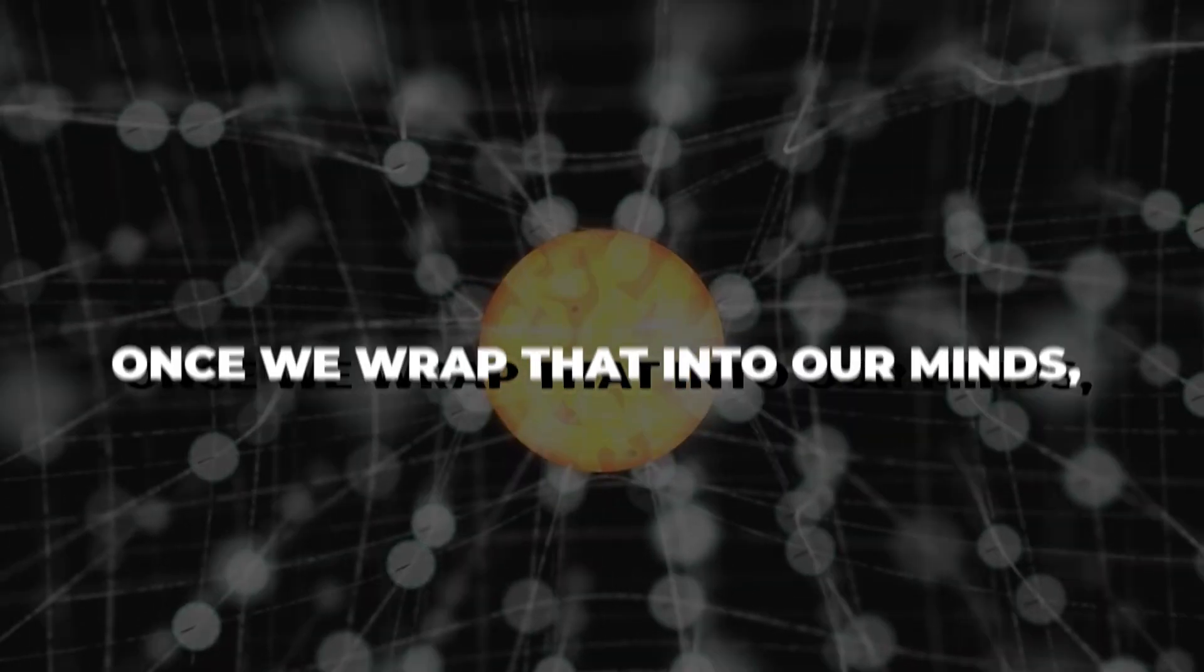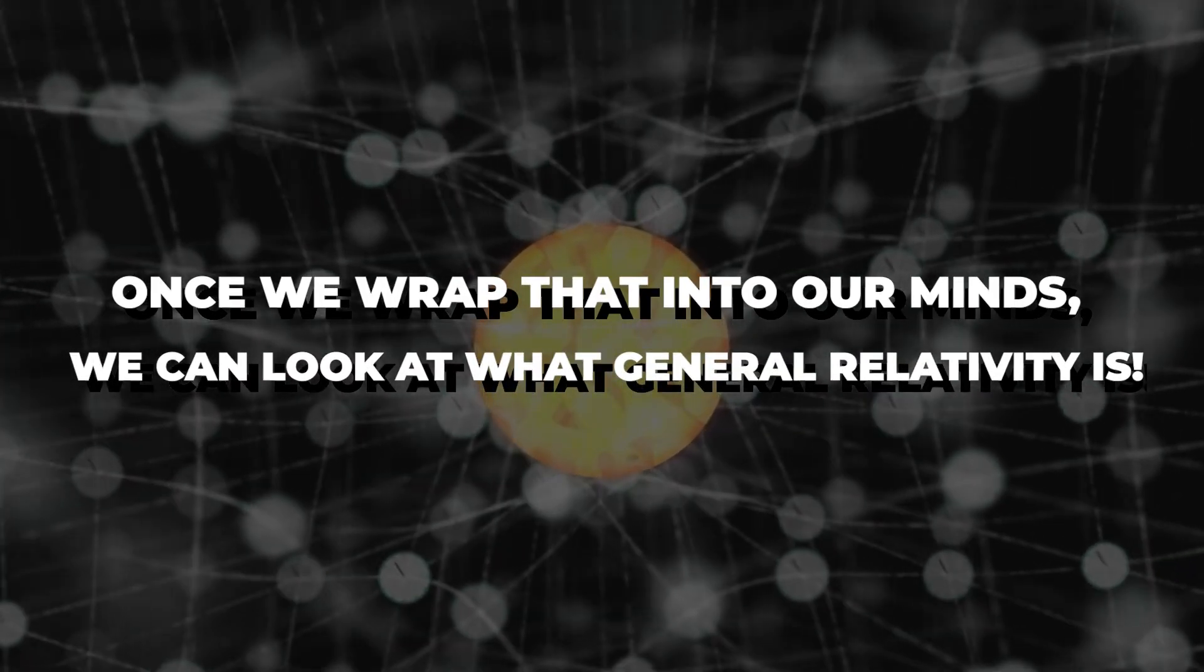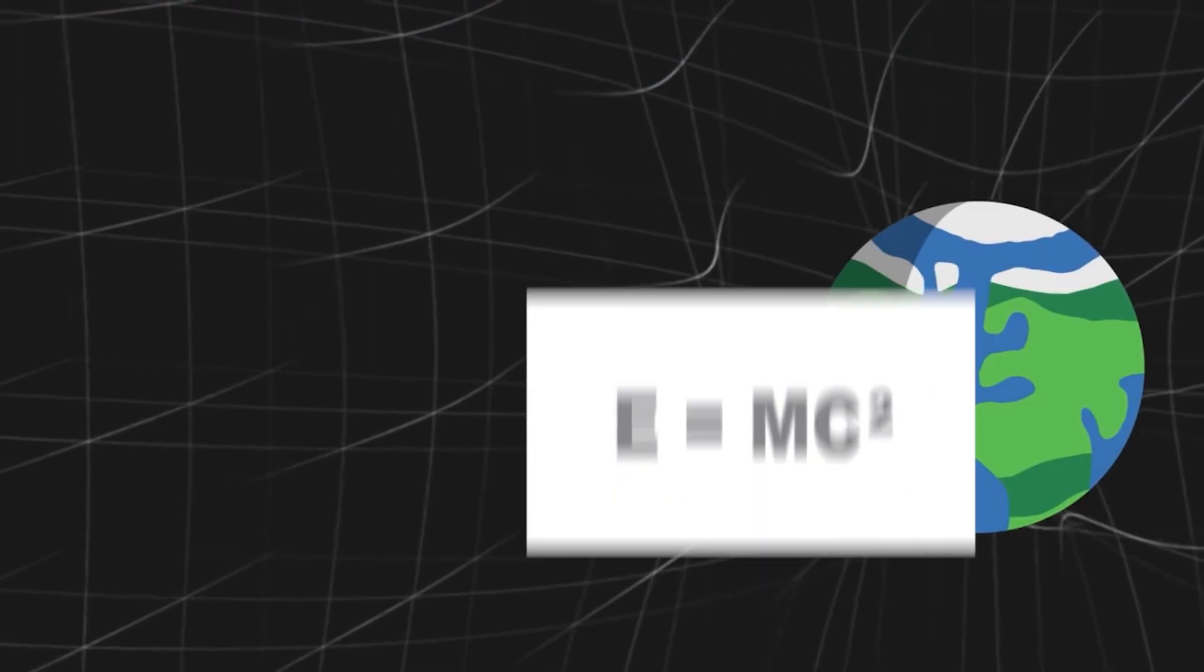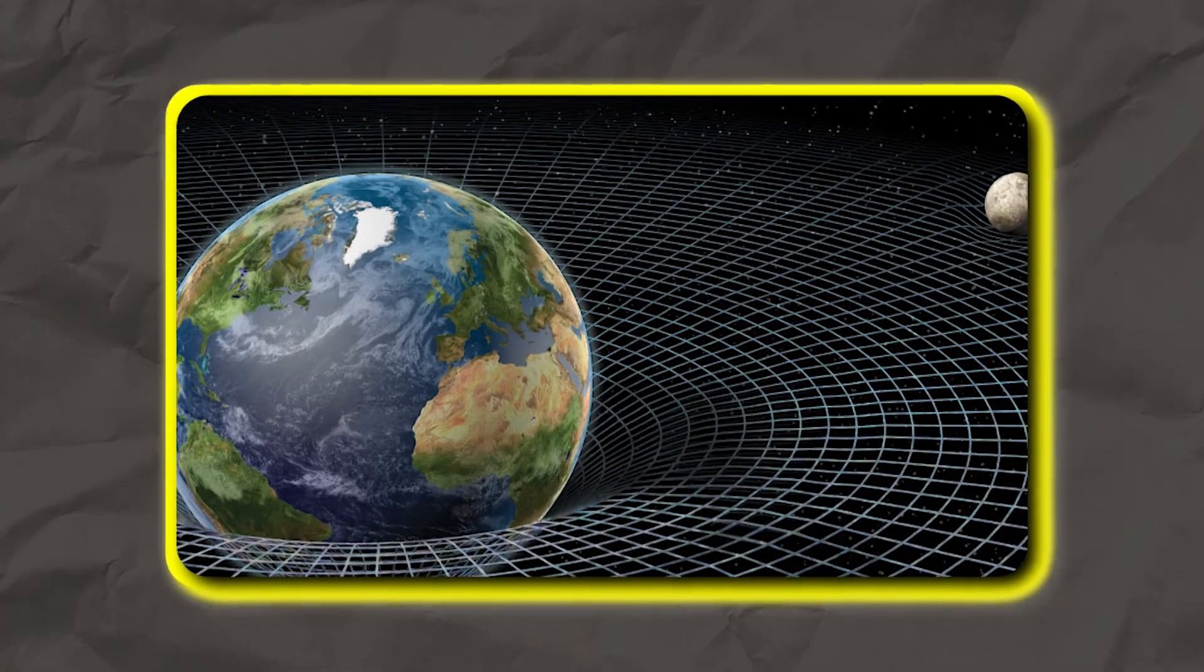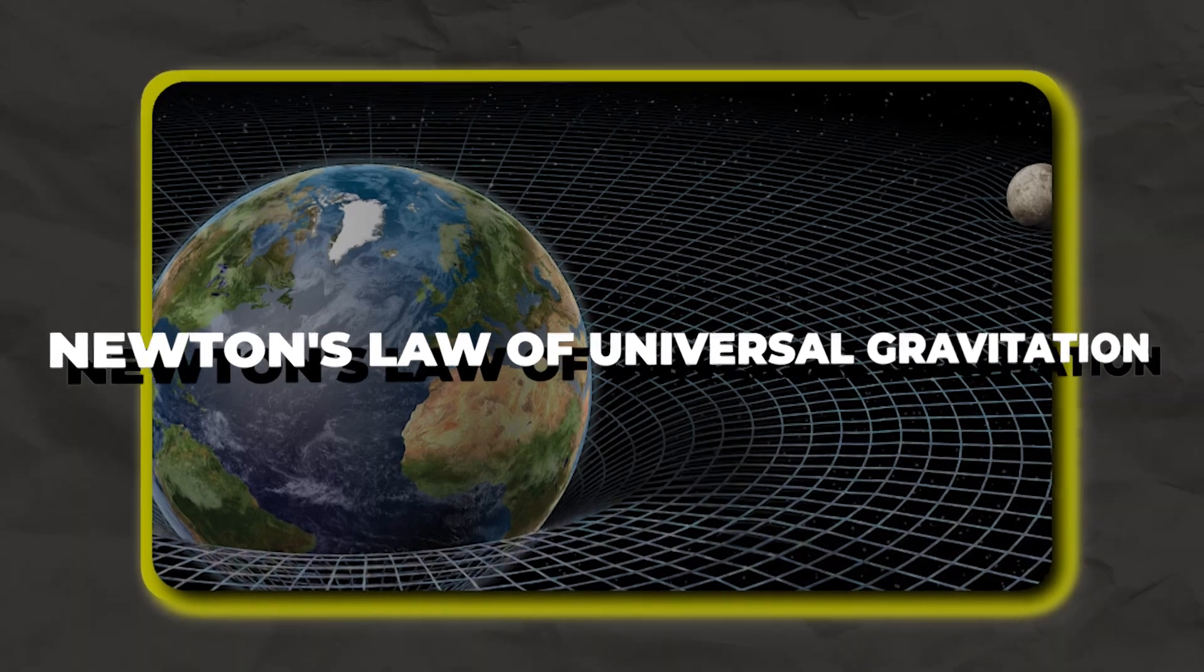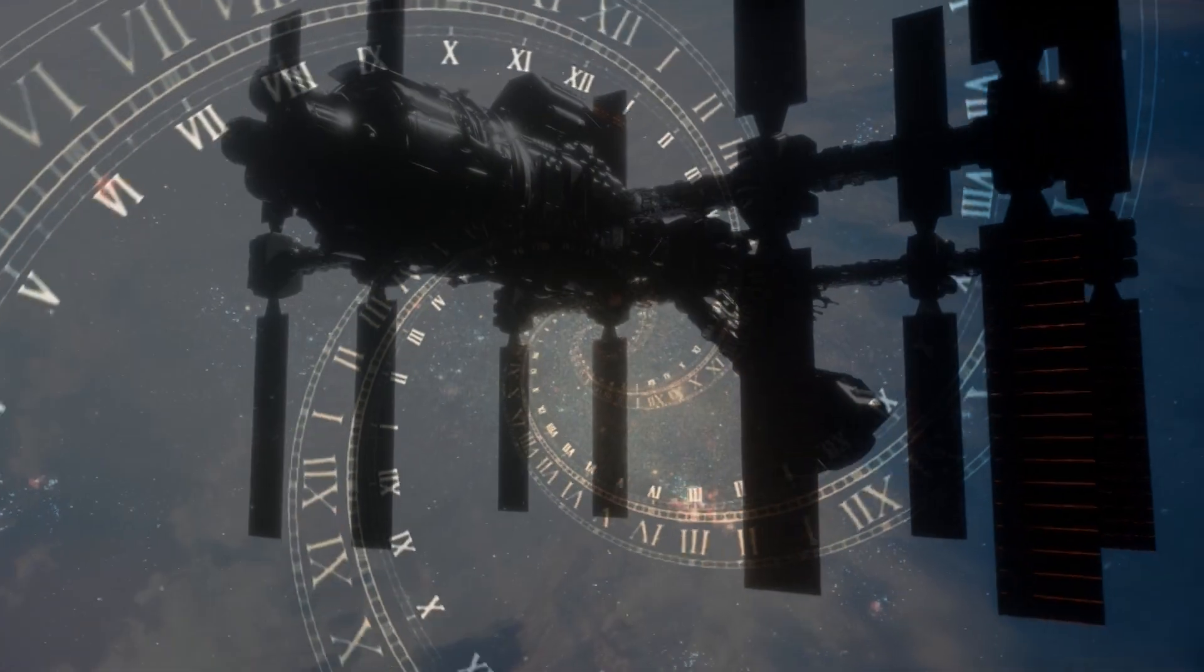Once we wrap that into our minds, we can look at what general relativity is. General relativity, Albert Einstein's magnum opus, is a theory of gravitation that replaced Newton's law of universal gravitation and redefined our understanding of space, time, and gravity.